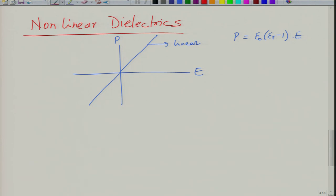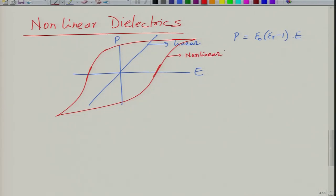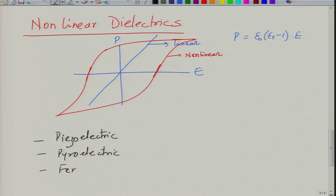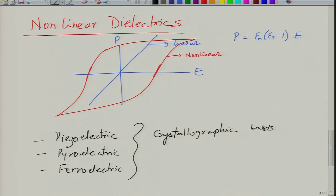In the case of non-linear dielectrics, especially at higher fields, you might have different behavior. For example, a ferroelectric material will show a hysteresis loop — a polarization switching loop. It has a certain linear part at low fields, but that linear part is limited; the rest of the curve is quite non-linear. These non-linear dielectrics have special characteristics, and generally we classify them in three categories: piezoelectric, pyroelectric, and ferroelectric. These have both a crystallographic and a thermodynamic basis of distinction.